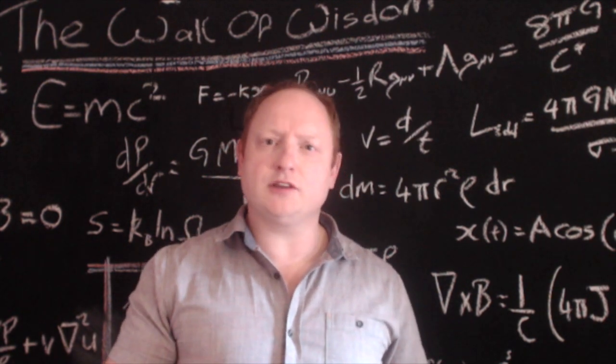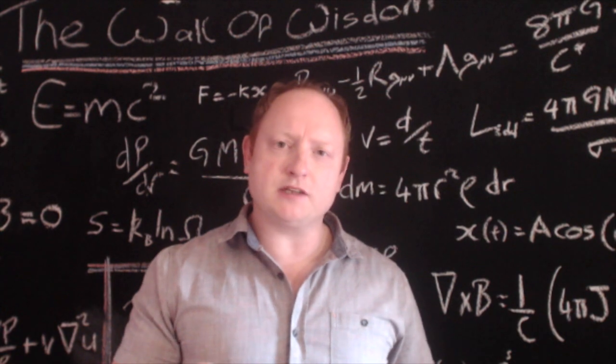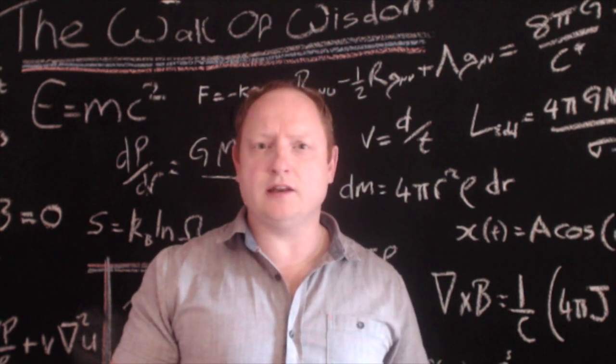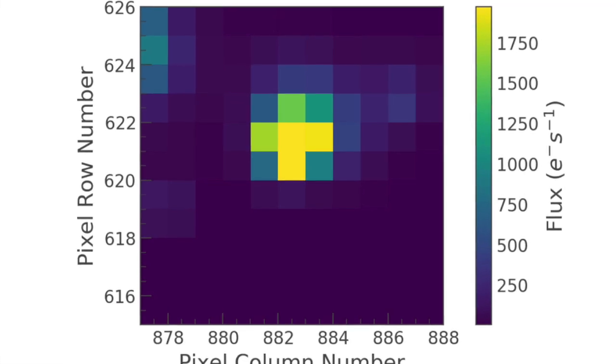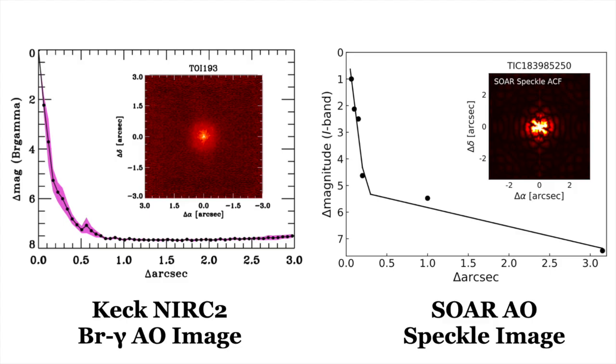Highly sensitive adaptive optics observations were also made to rule out background stars that are positioned very close to LTT-9779 on the sky, those that could be causing the transit events in the TESS light curve. You see, the TESS pixels cover a large angular area on the sky, around 22 arc seconds, which is large enough that we can commonly have these background contaminants infecting our light curves. However, both NIRC2 at the Keck Observatory and HRcam at the SOAR telescope confirmed the lack of any contaminating sources.